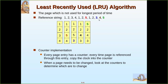Then one is referenced again — it is very recently used. After one, two is referenced again, then three comes in. Now four is the least recently used among the current pages, so it is replaced with three. Then four is referenced again. At that point, one, two, and three have all been recently referenced, and five is the oldest. So four replaces five.